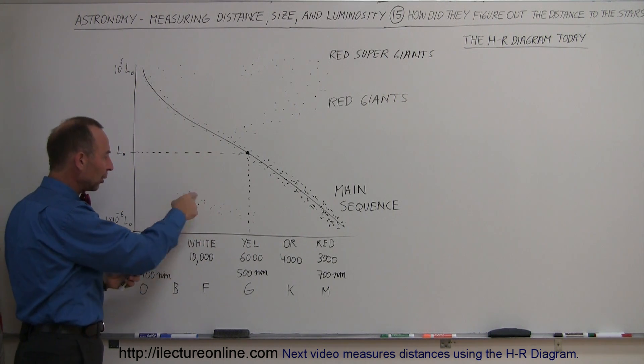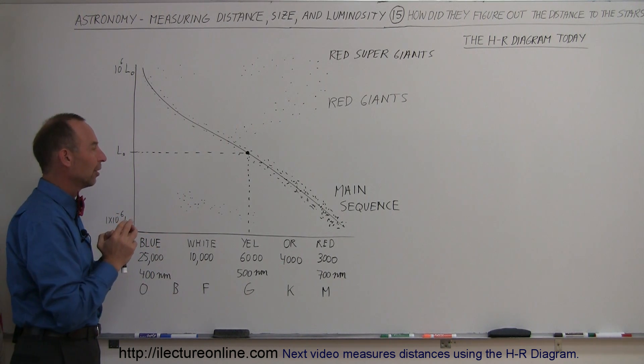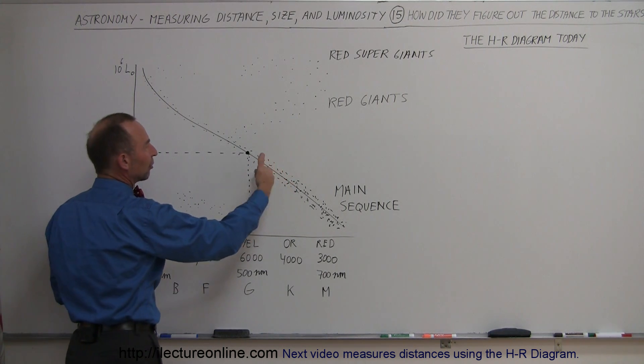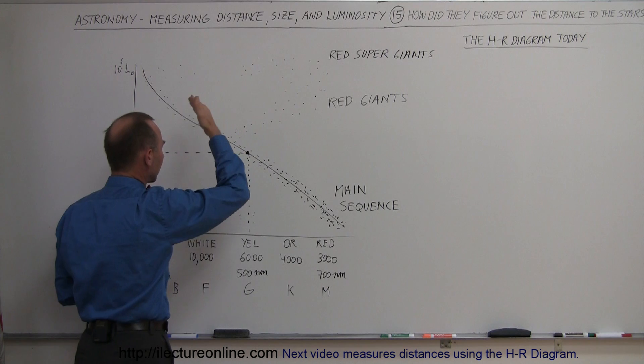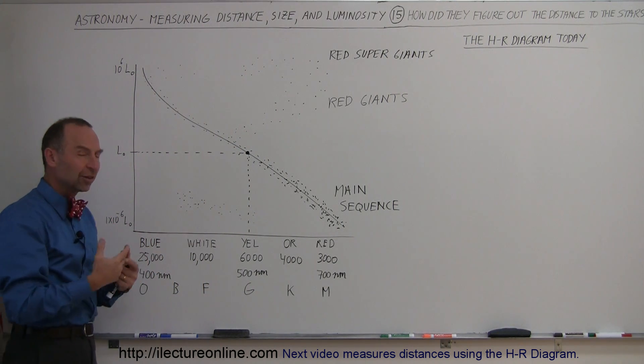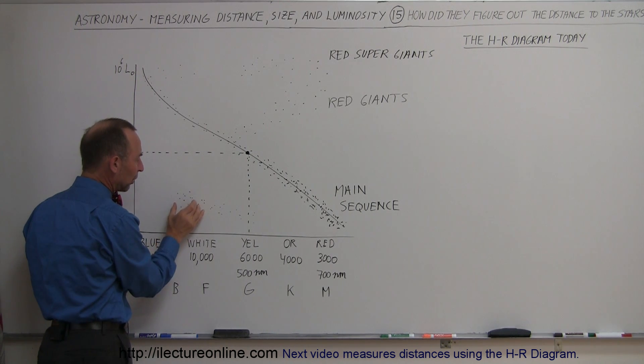Now here, notice here the little white dwarves. And it turns out that the white dwarves are typically the end stage of a star's life. So what typically happens is a star becomes a main sequence star, then eventually becomes a red giant, and then eventually becomes a white dwarf. And as a white dwarf exists in the universe for billions and billions of years, it slowly begins to cool down.